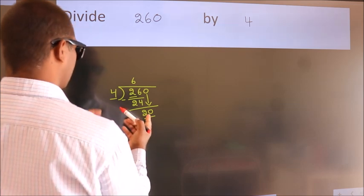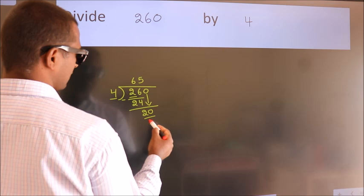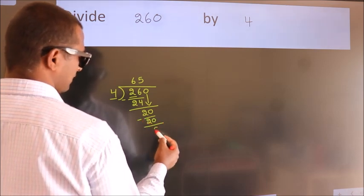When do we get 20? In the 4 table, 4 times 5 is 20. Now we subtract and we get 0.